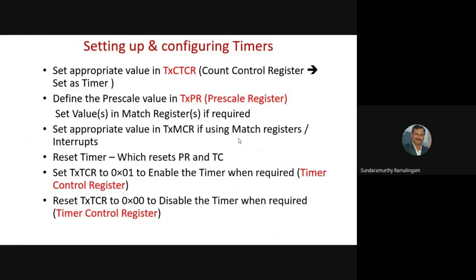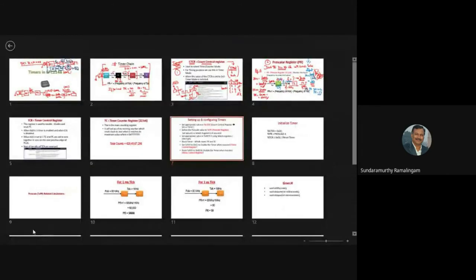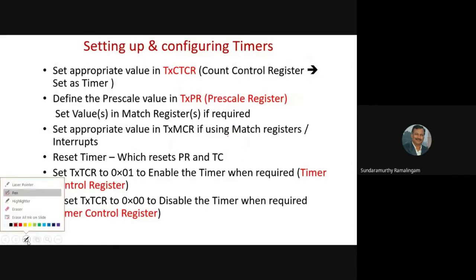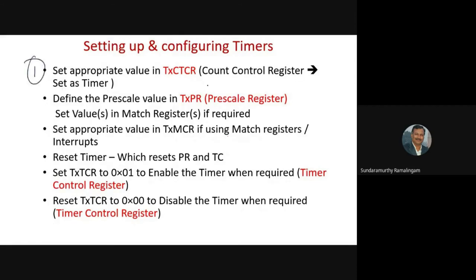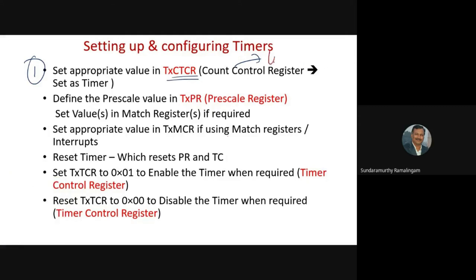Setting up the timer counter is pretty straightforward. The steps are: first, configure the timer as timer — set Count Control Register to 0x00. Second, load the pre-scalar with a suitable value. Third, start the timer. Fourth, wait for the timer to reach a specific value.